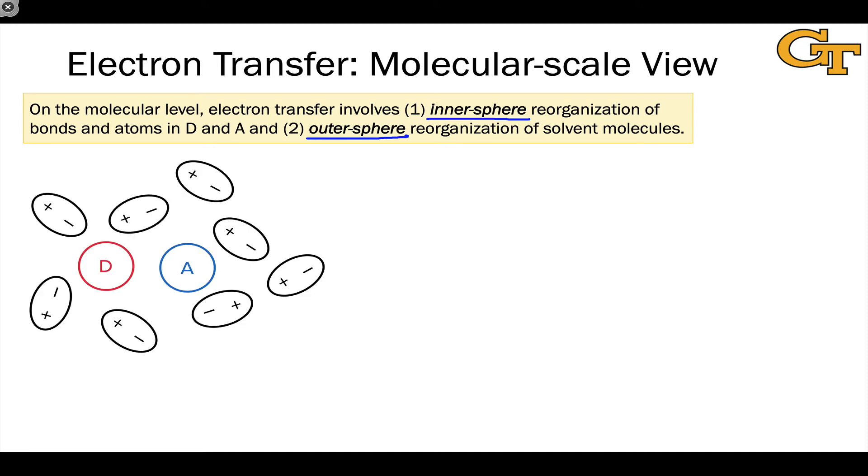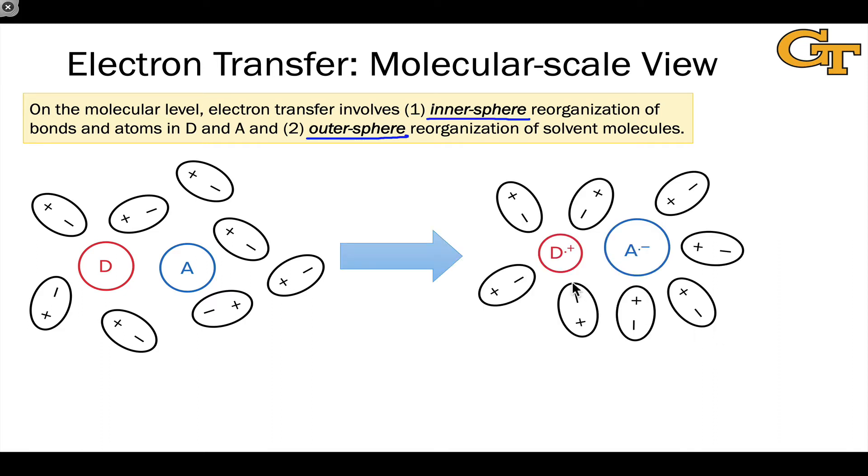We can think of electron transfer as involving changes in both D and A. D transfers an electron to A, causing a change in the shapes of the D and A molecules and their bonds, their bond lengths, bond angles, etc. That's represented here roughly as a change in the size of the circles, D dot plus getting smaller and A dot minus getting bigger.